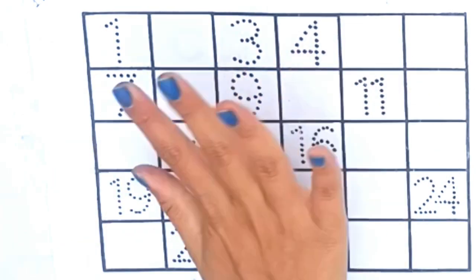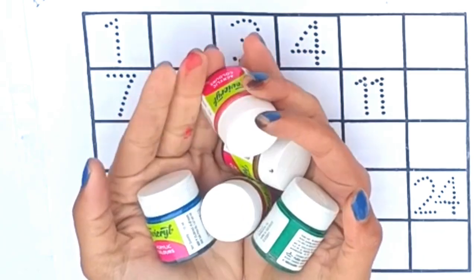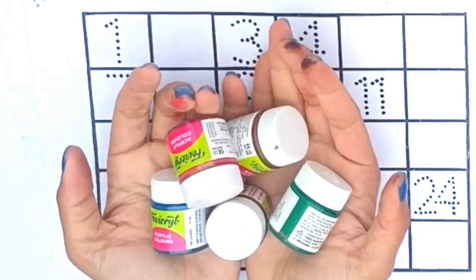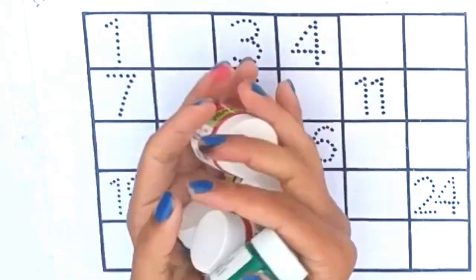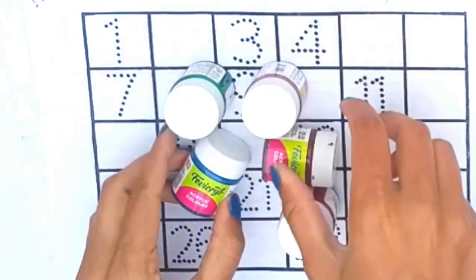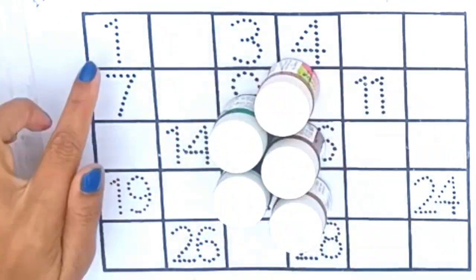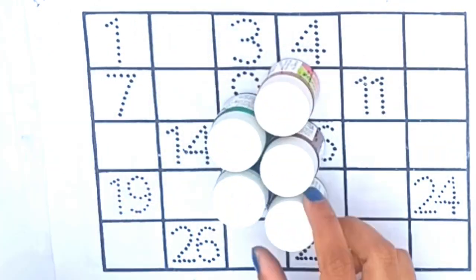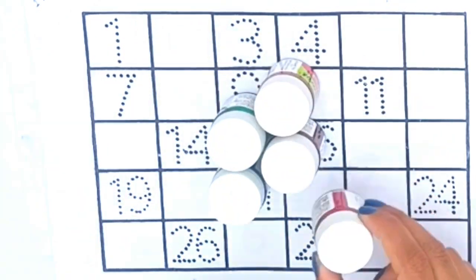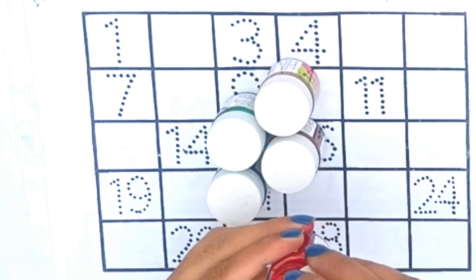Hello Kids, welcome to Kids Uni Classes. Today we learn Colors and 1 to 30 Counting. Yeh hai hamaare colors, yeh hai bacchho colors.